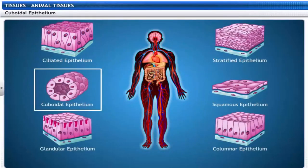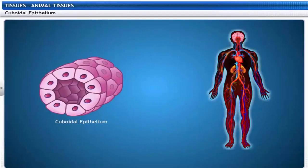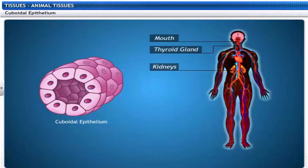These cubical cells belong to cuboidal epithelium tissue. This tissue is found in the lining of kidney tubules, salivary glands, and thyroid glands where it provides mechanical support.